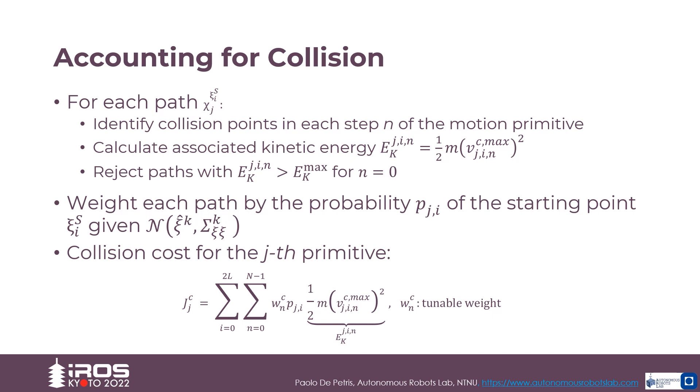For each generated path, the method first identifies the possible collision points in each step of the motion horizon of the primitive. Then, it identifies for each step the possible collision points with maximum velocity and associated kinetic energy.